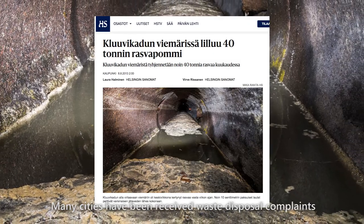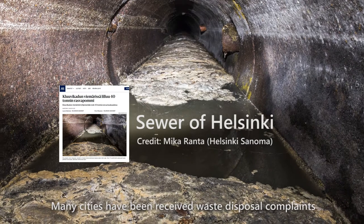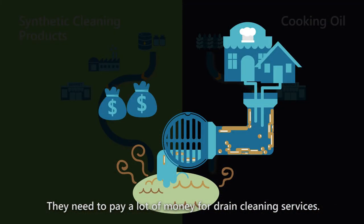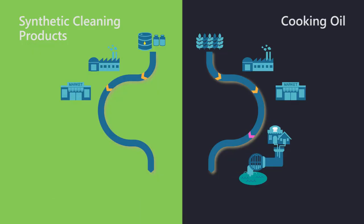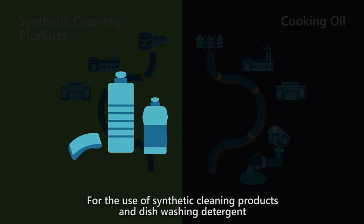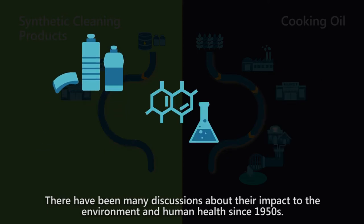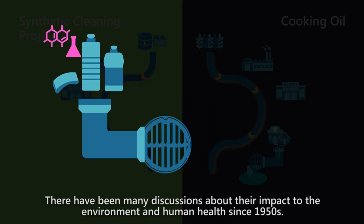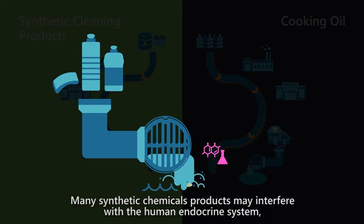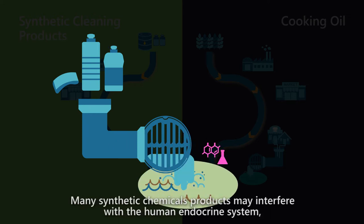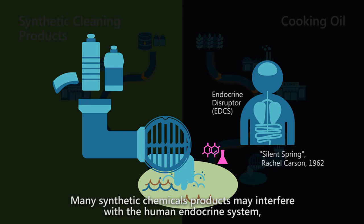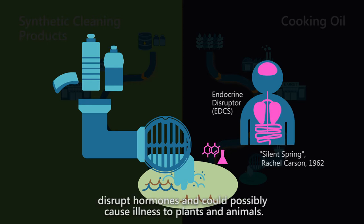Many cities have been receiving waste disposal complaints and need to pay a lot of money for drain cleaning services. For the use of synthetic cleaning products and dishwashing detergent, there have been many discussions about their impact on the environment and human health since the 1950s. Many synthetic cleaning products may interfere with the human endocrine system, disrupt hormones, and could possibly cause illness to plants and animals.